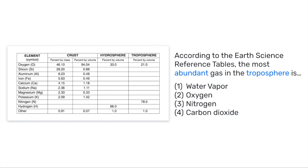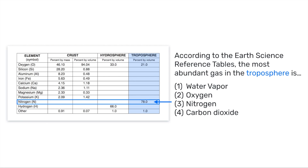So we're looking for an abundant gas in the troposphere. I automatically know I need to look at the troposphere column and the numbers. Oxygen is 21%, nitrogen is 78%, and other is 1%. If I want the most abundant gas, I'm looking for the largest percentage, which is clearly 78%. So my answer would be nitrogen.